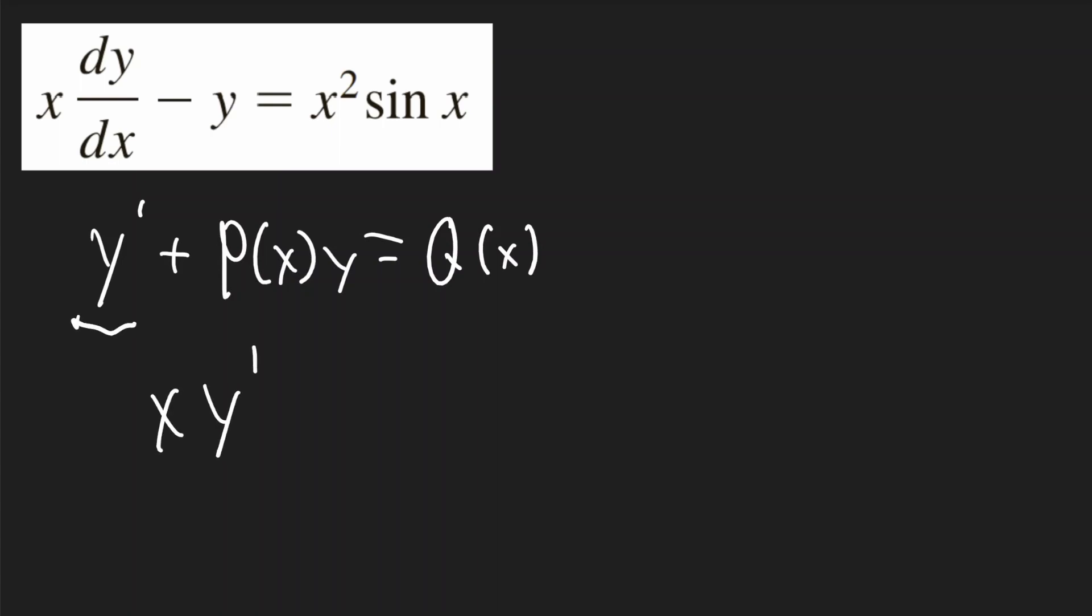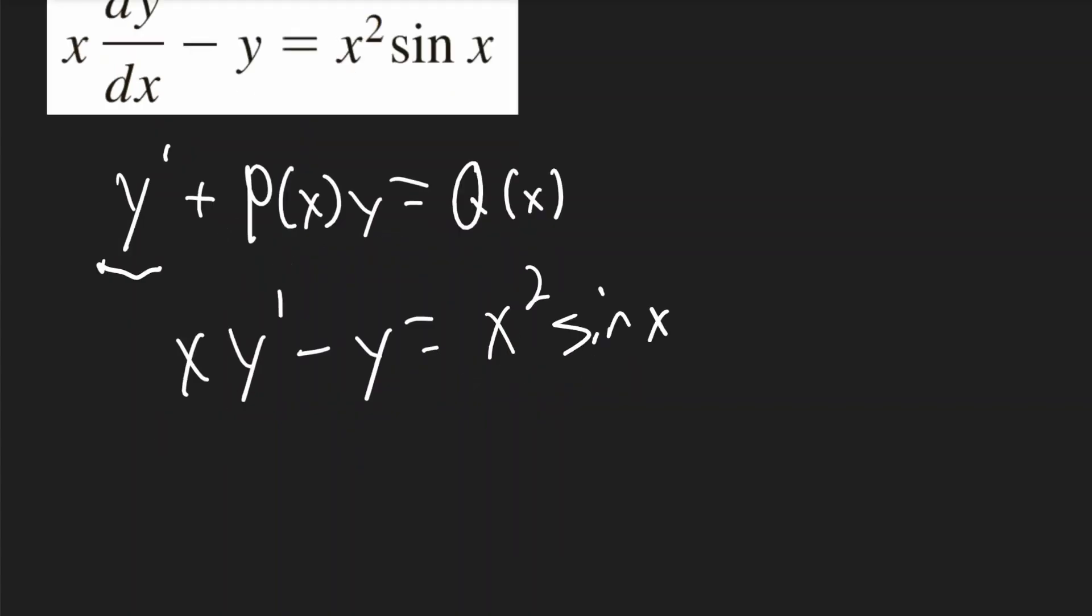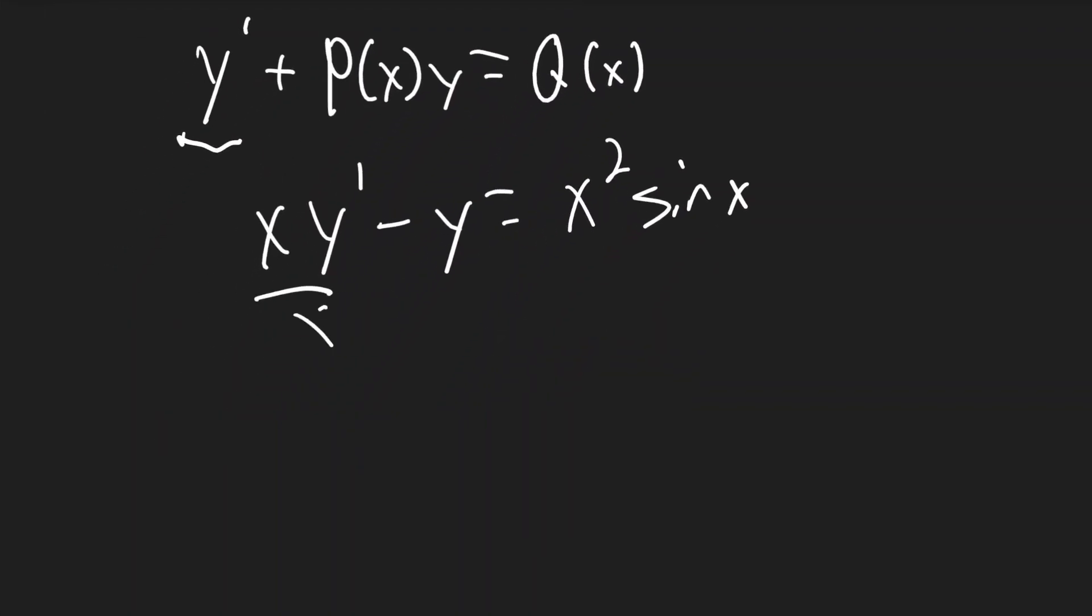In the original equation, we have x times y prime minus y is equal to x squared sine of x. So I can get y prime by itself by dividing all the terms by x.